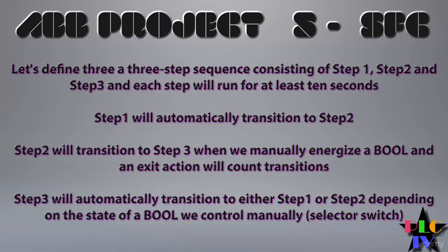Once we do get to step three, we want to be there for ten seconds as well. After that ten seconds, we want to automatically transition back to either step one or step two. What's going to make the difference is the state of another bool. Think of that like a toggle or a selector switch — if it's in one state we go to step one, if it's in the other state we go to step two. It doesn't really matter which state is assigned to which; you're in full control of that.